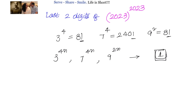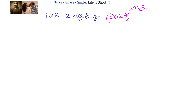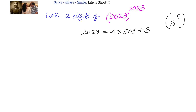Let's apply this logic and find out the last two digits of 2023 whole to the power of 2023. We understand that since the number ends with 3, we have to raise it to the power of 4 so that it ends with 1. Then, whatever the power, I can handle it using the rule for numbers ending with 1 to get the last two digits.